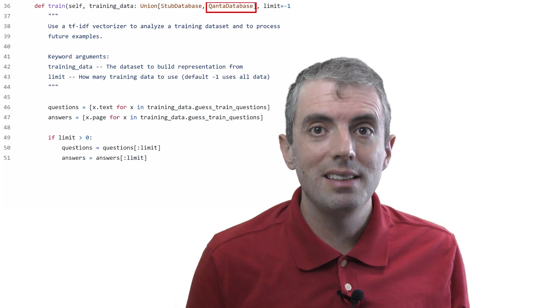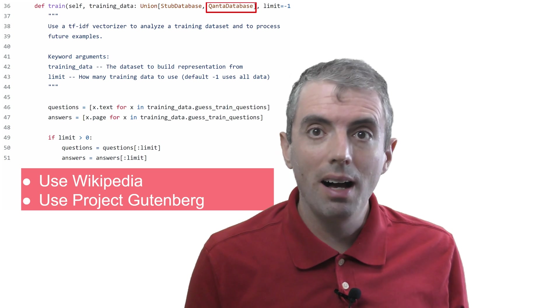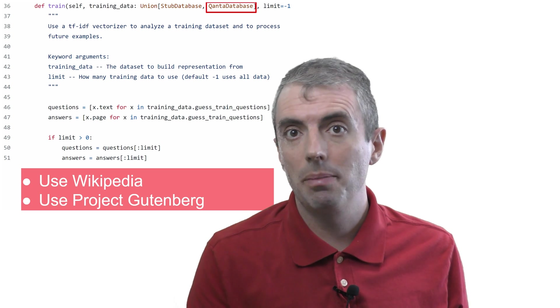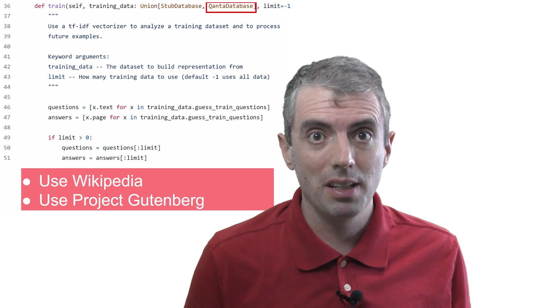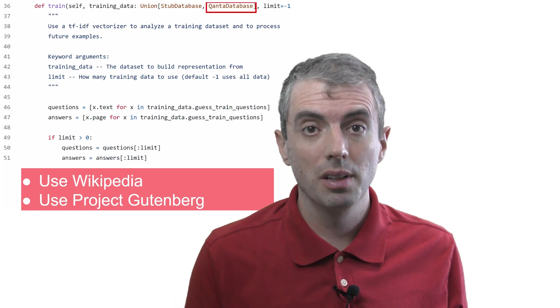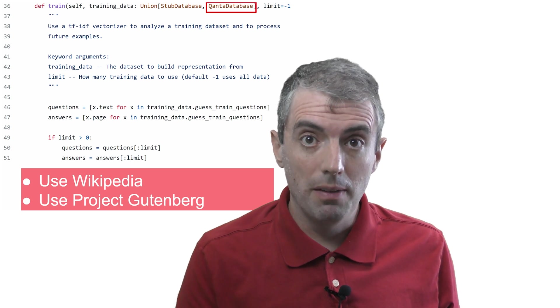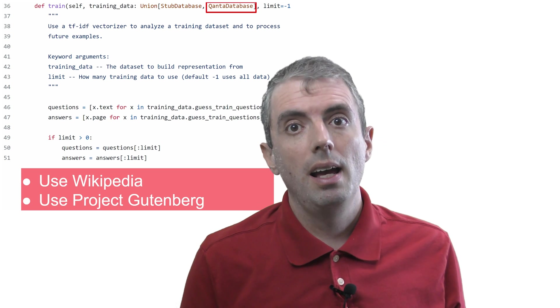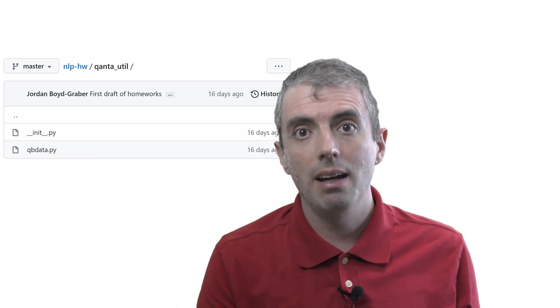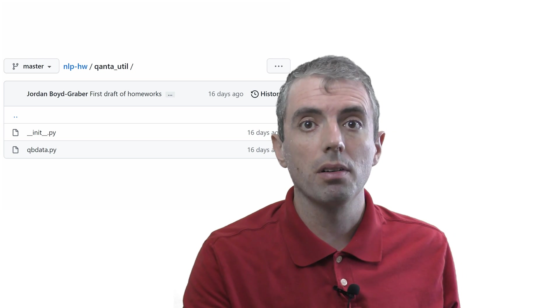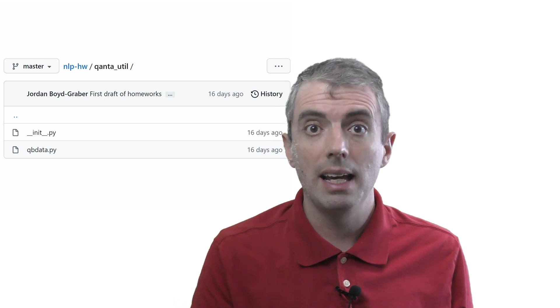This is probably one of the easiest ways to improve your accuracy. Add more data. Two obvious places to get more data are Wikipedia and Project Gutenberg. But this is also a place to be creative. Think about other sources that you could use, particularly where your system isn't doing as well, but if you do that, you'll need to make sure that your API is consistent with the one we have for the quanta database. This is important, but straightforward. You basically need to line up your answers with the answers used in our data.